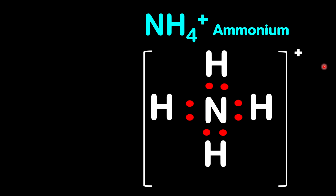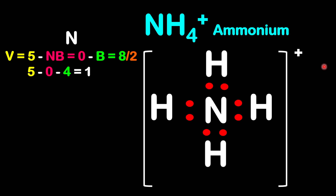Now let's look at the ammonium ion. Let's start by calculating nitrogen first. Nitrogen is in group 5. We have no non-bonding electrons. We have 8 bonding electrons: 2, 4, 6, 8 — so 8 divided by 2. So we have 5 minus 0 minus 4 gives positive 1. So nitrogen has a formal charge of positive 1 in ammonium.